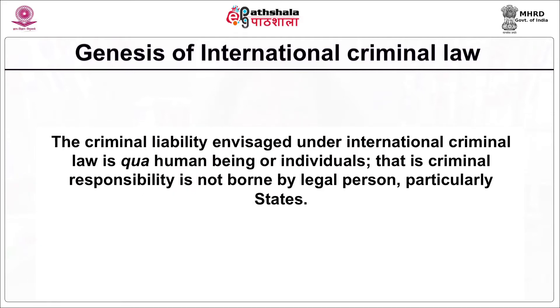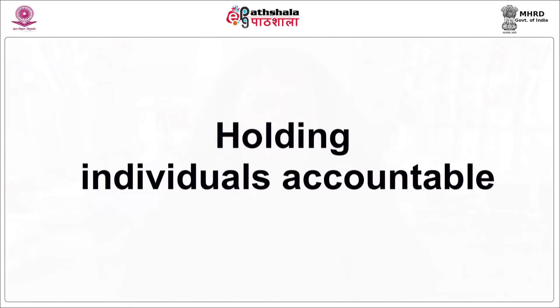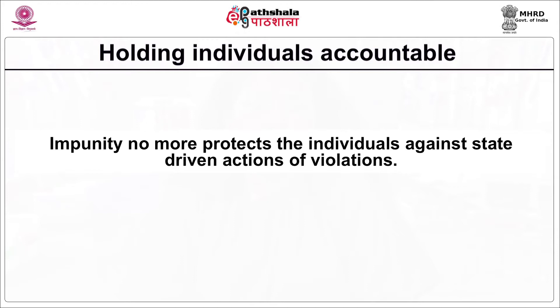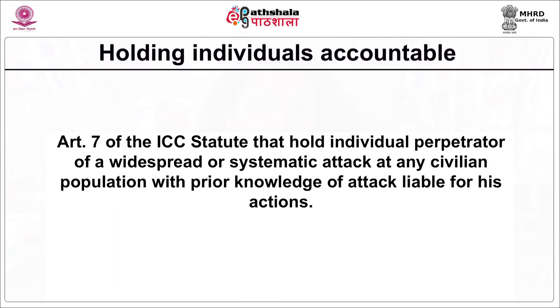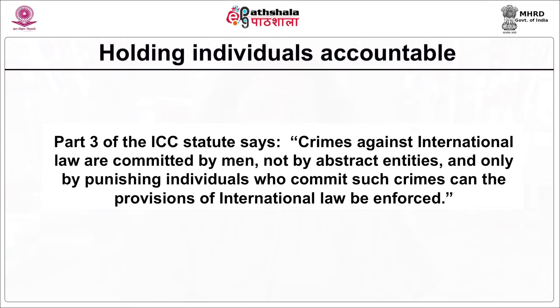The criminal liability envisaged under international criminal law is a new focus. One has to choose between the sanction of one superior who orders one to execute a violation of human rights and the sanction that awaits under international criminal law. Impunity no more protects individuals against state-driven actions of violations. Article 7 of the ICC Statute holds that individual perpetrators of a widespread or systematic attack on any civilian population, with prior knowledge of the attack, liable for their actions.